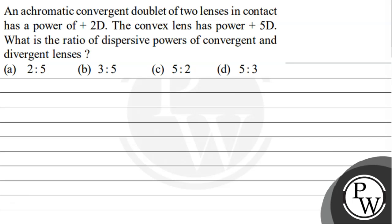Hello, bachro. Let's see the following question. An achromatic convergent doublet of two lenses in contact has a power of plus 2 diopter. The convex lens has power of plus 5 diopter. What is the ratio of dispersive powers of convergent and divergent lenses?